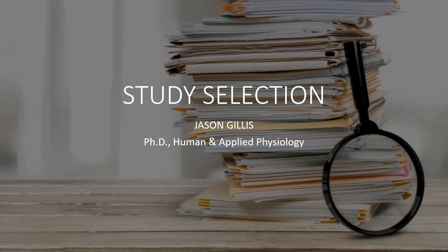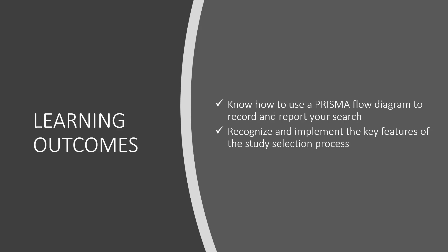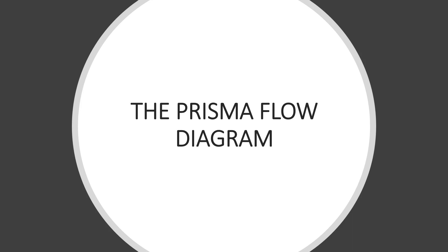In this lecture, we'll cover how to select studies to include in your review and how to systematically identify which studies meet your criteria in an unbiased way. We'll cover the PRISMA flow diagram, introduced briefly at the end of the last lecture, and then how to select studies in just seven steps. The main learning outcomes are to know how to use a PRISMA flow diagram to record and report your search, and to recognize and implement the key features of the study selection process.